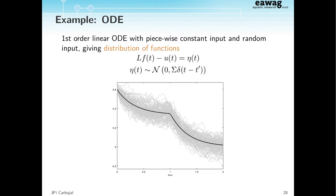A typical example: if you have a linear ODE with Gaussian noise — random forces acting on the system — all the gray trajectory lines are actual solutions of the stochastic differential equation. We're saying there's a particle or spring being driven by random environmental forces. All those solutions are actual valid realizations of that dynamic, and the mean solution corresponds to the actual non-stochastic problem.